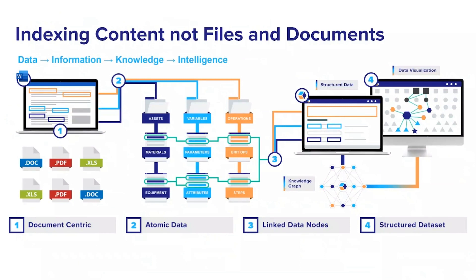As data grows exponentially, the approach just described is becoming increasingly intractable. With the power of computing available today, a better approach is to break apart all of the data in documents into atomic elements of data. As these data elements are organized into relevant categories, the data has context, converting it into information. This approach is effectively indexing the content in the documents, not the documents themselves. These atomic data nodes can then be linked together to build a multidimensional structured knowledge base, which can be visualized in many different ways not possible when this information is buried inside of documents.